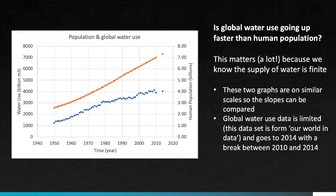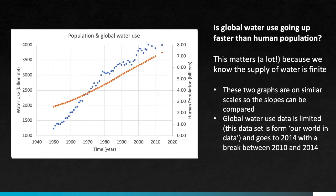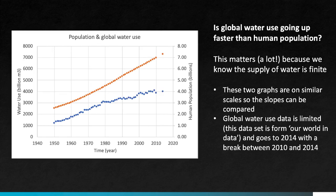I want to make a point here and show you a version of the figure where I manipulated the y-axis on the left to make it look like water use is actually going up at a faster rate than population. So if you read a graph like this, be careful that you're paying attention to what the axis values are. This dataset only goes to 2014 and there's a break between 2010 and 2014, but what it shows is that population is going up faster than water use.